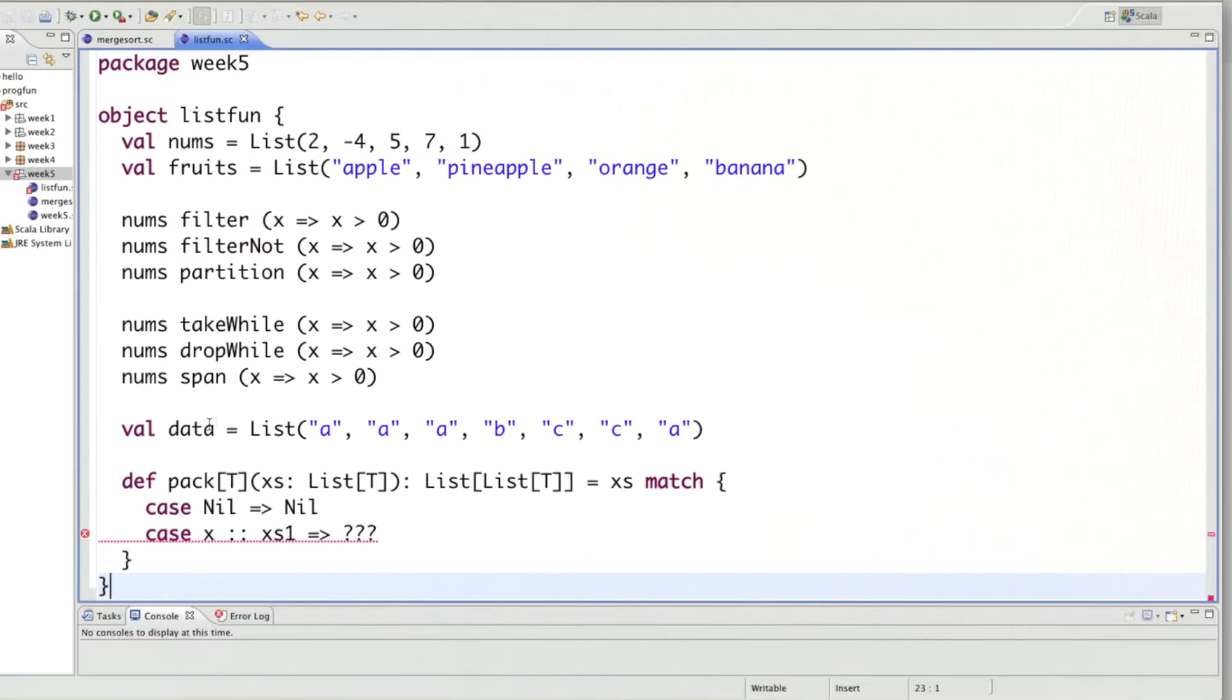I've already copied my input list data and the template of the pack function. The only case to fill in is when the list is non empty, consisting of a head X and a tail XS. Which of the six functions here would be applicable? Well, what we want to do is take off a leading sub list and then do something with the rest of the list. So it's a combination of take while and drop while and that's what span would give us.